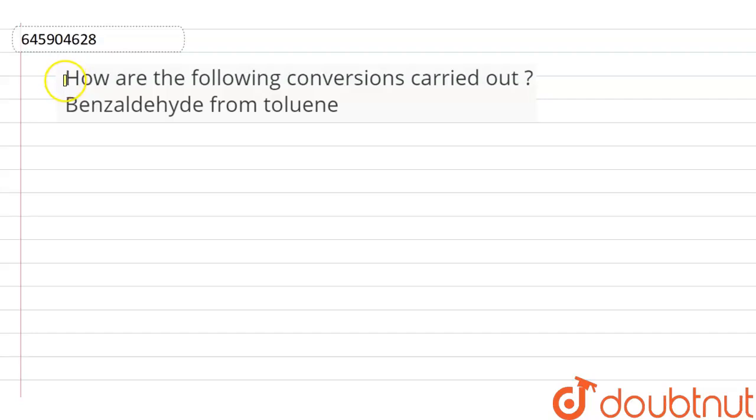Here is the question: How are the following conversions carried out? That is benzaldehyde from toluene.